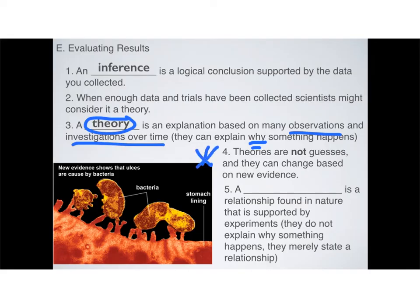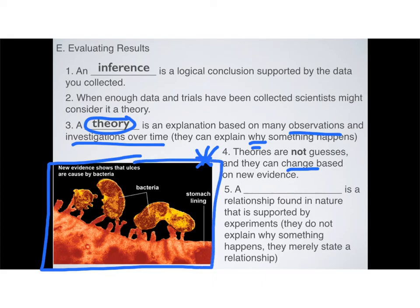Another important thing to get out of this is that theories are not guesses. A lot of times, colloquially, we use the term theory to mean like, oh, that's just a theory. What we should be thinking is that's just a hypothesis. Hypothesis is just a guess. A theory is not a guess. And one of the most important things and what makes science so cool is that theories can change. For example, we thought that stress was the primary factor that causes ulcers in your stomach and in your intestines. But what we found out was there's actually bacteria in your stomach that can cause ulcers. And so we can change our entire theory based on new evidence that we collect.